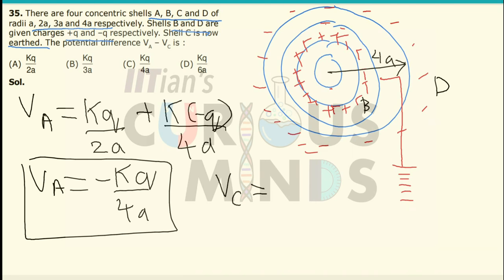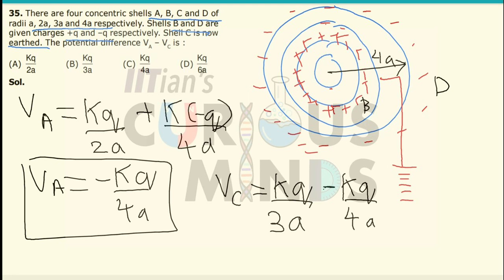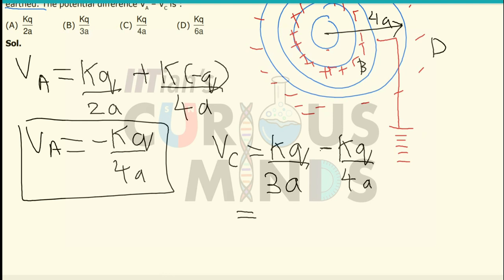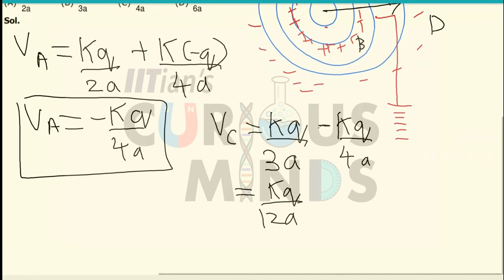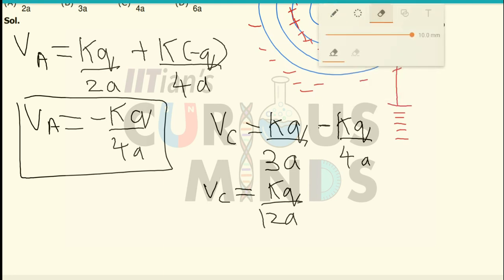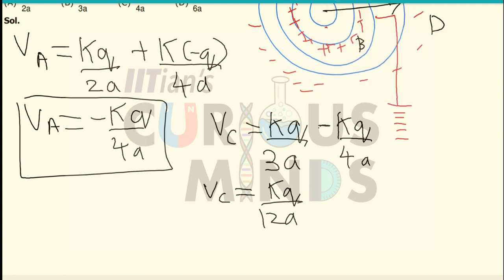The potential at point C will be due to the outer charges at D and the inner charges at B. Due to the inner charges at B, it will be equal to KQ divided by the radius of shell C, which is 3A. The contribution from shell D gives negative KQ divided by 4A. So the potential at C is KQ divided by 3A minus KQ divided by 4A, which simplifies to a positive term of KQ divided by 4A.